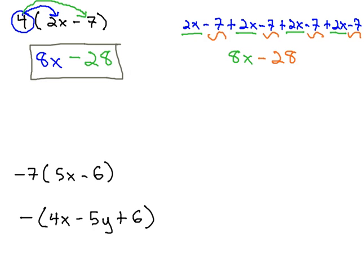And also, whoops, negative 35x. And also, distribute the negative 7 to the negative 6. Be careful to keep the signs with the number. A negative times a negative is a positive. 7 times 6 is 42.